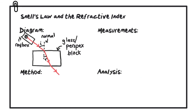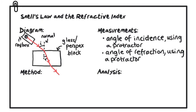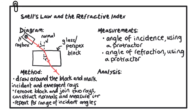To summarize: the experiment has four key areas. First, the diagram — clearly draw and label all apparatus and key measurements, including the ray box, the glass or perspex block, the normal, the angle of incidence, and the angle of refraction, ensuring those angles are labeled between the ray and the normal. The two key measurements are the angle of incidence and angle of refraction, both requiring a protractor. Draw around the block, mark the incident and emergent rays, remove the block, join the rays, construct the normals, and measure the angles for a range of angles of incidence.